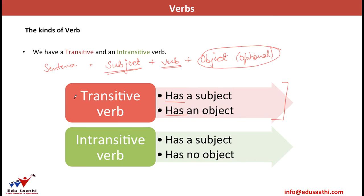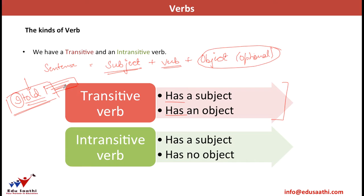For example, 'I told.' Obviously, I is the subject, told is the verb. But it is not a complete phrase in itself because it is incomplete — I cannot just simply say 'I told.' So 'told' takes an object: I told something or someone about something. Since it needs an object to complete the sense of the sentence, 'told' is a transitive verb.